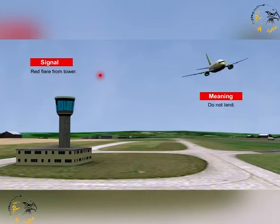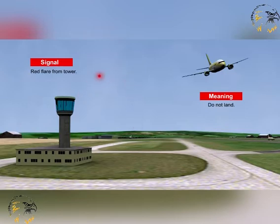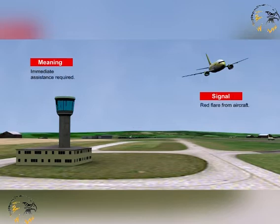A red flare from air traffic control to an aircraft in flight means that the pilot must not land, whereas a red flare from an aircraft means that the aircraft requires immediate assistance.